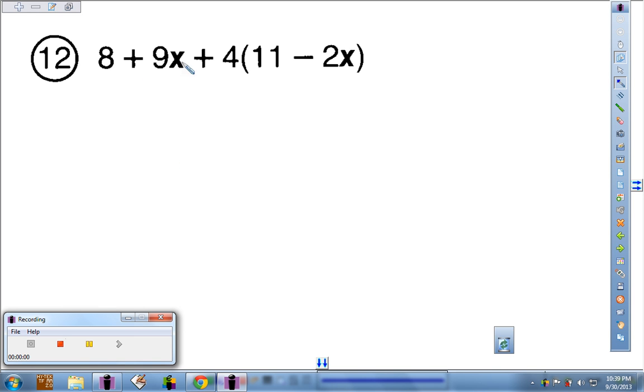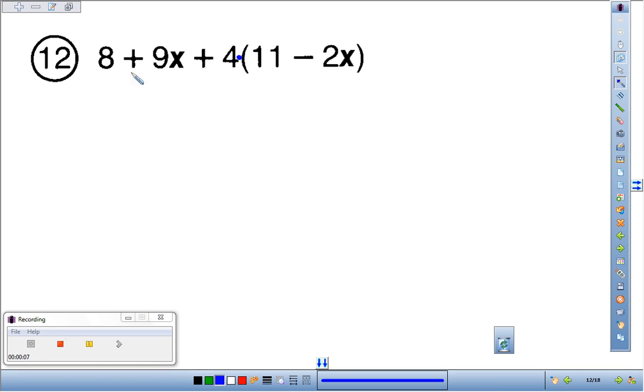In number 12, we've got 8 plus 9x plus 4 times the quantity 11 minus 2x. Before you can do any of this, we need to multiply. Order of operations is multiply first.